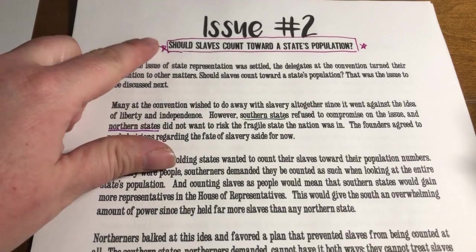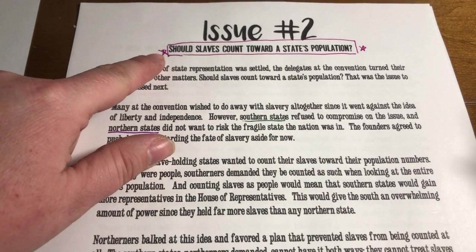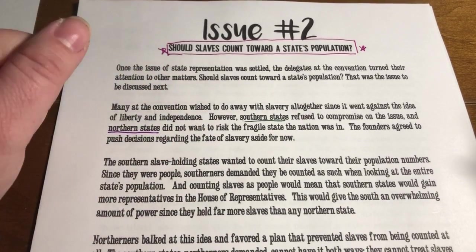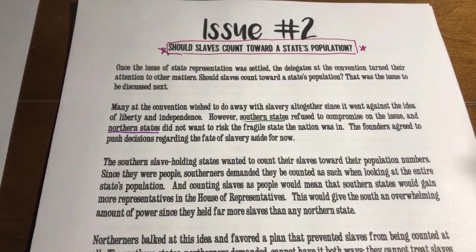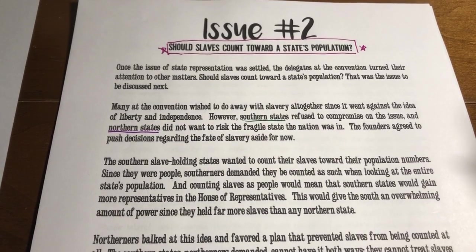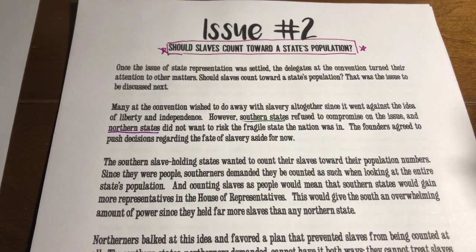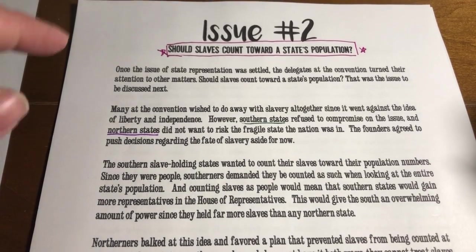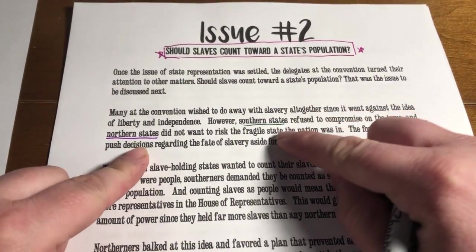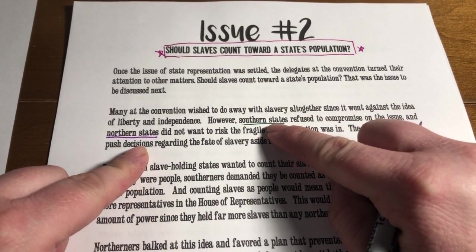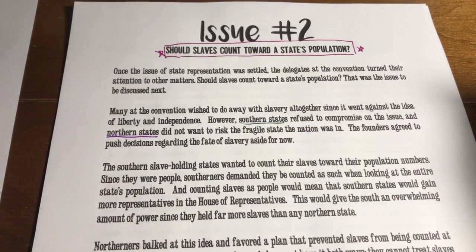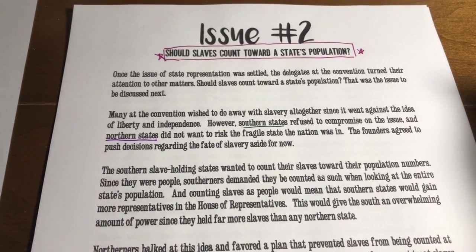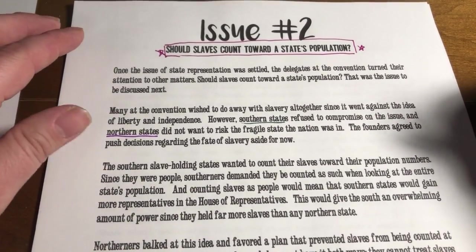Our second issue was: should slaves count towards the state's population? On your graphic organizer, that's what you're going to put under the issue. Obviously this compromise is no longer in place since we've gotten rid of slavery, but we are going to need to look at two sides. Even before we read, you should be aware that the two sides are the southern and northern states.